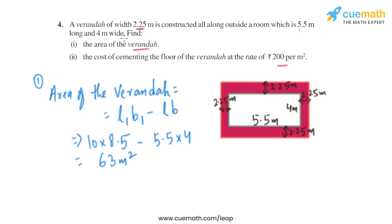Now in the second part, we have to find the cost. The rate is given in the question as 200 rupees per square meter, and we know the area is 63 square meters. So we just need to multiply 200 with 63, which gives us rupees 12,600. That will be the cost of cementing the floor of the veranda.